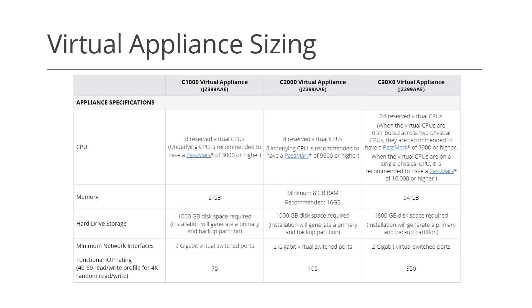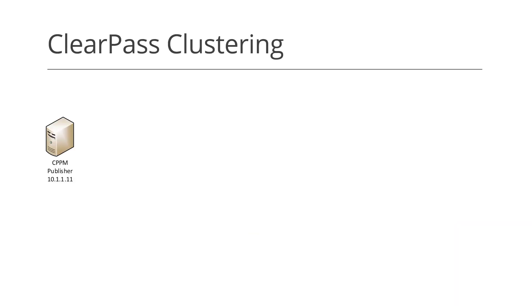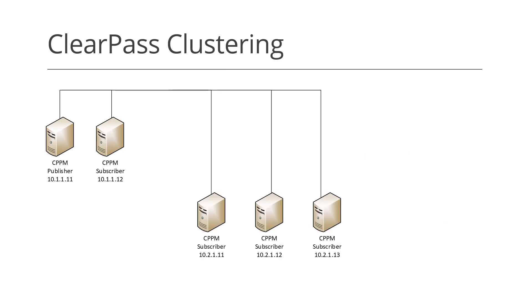Virtual appliances are sized to match the expected performance of the corresponding hardware appliance. Please note, you can cluster multiple ClearPass servers for both redundancy and increased capacity. You can mix and match hardware and virtual appliances in your cluster as well as different size appliances, but be careful on how you balance your authentication requests to avoid overloading individual servers. The clustering feature is included with your platform license.